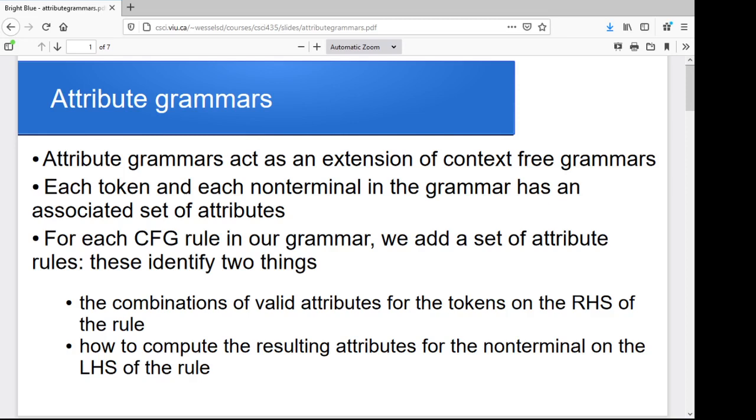And the idea is to use attribute grammars, where this is effectively context-free grammars plus. We decide that for every token and for every non-terminal in our grammar, we're going to allow them to have an extra set of attributes, things like their data type.